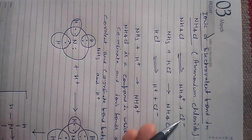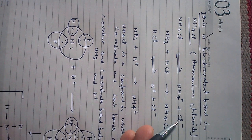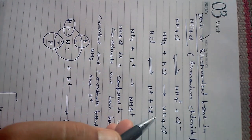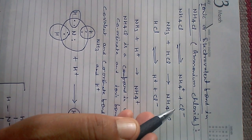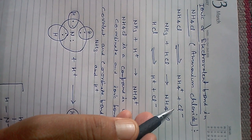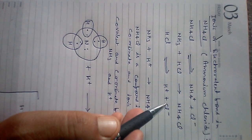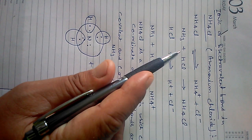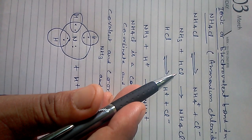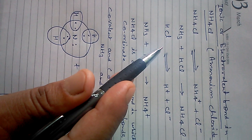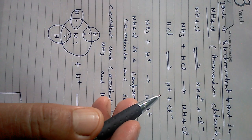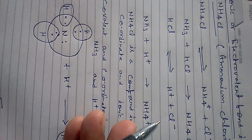The molecular formula of ammonium chloride is NH₄Cl. NH₄Cl is formed by two ions: one is NH₄⁺, the ammonium ion, and the second is Cl⁻, the chloride ion. NH₄Cl is actually formed by the combination of ammonia and hydrochloric acid — NH₃ and HCl — and HCl on ionization gives two ions: H⁺ (proton) and Cl⁻ (chloride ion).